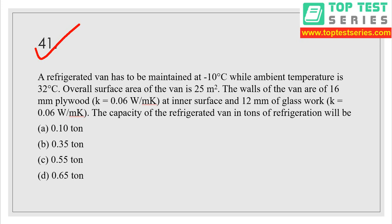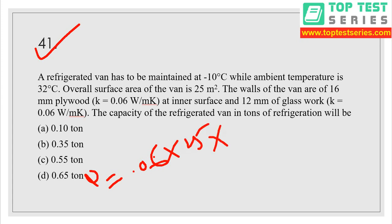The walls of the van are of 16 mm plywood, K equal to 0.06 watt per meter Kelvin at inner surface, and 12 mm of glass wool, K equal to 0.06 watt per meter Kelvin. The capacity of the refrigerator van in tons of refrigeration will be. We have to find out the capacity, so first we need Q. Area is 25.